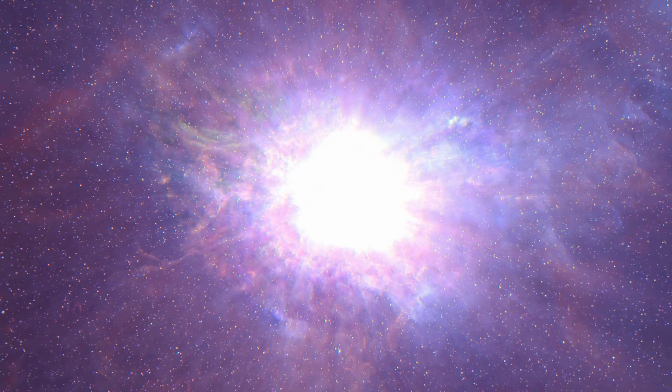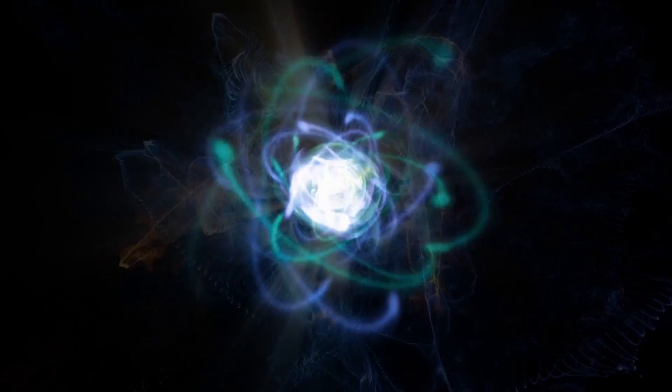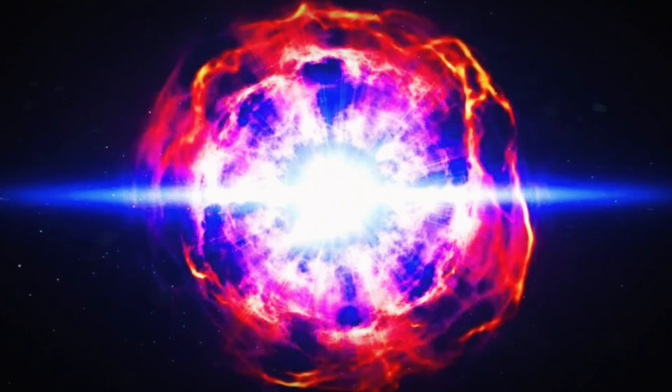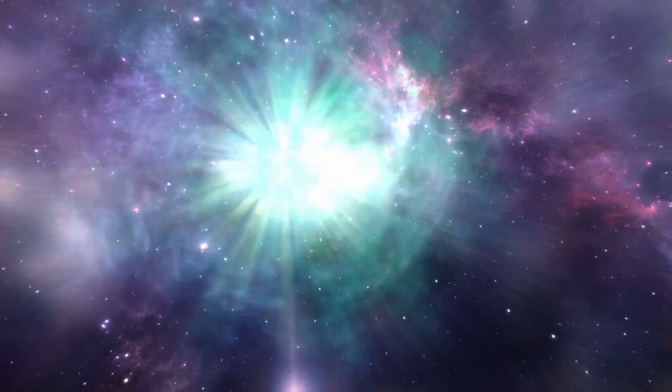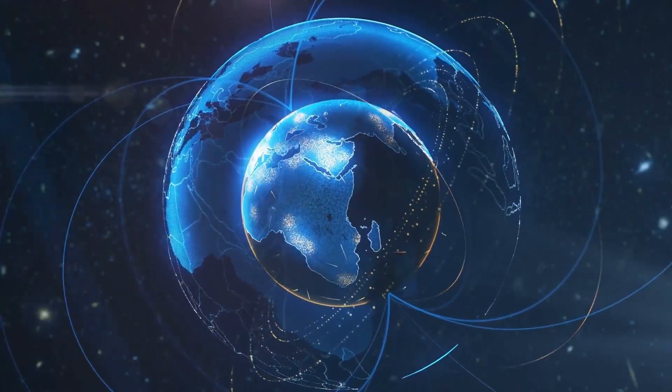Much of the supernova's energy is expended in the form of gamma radiation. For most supernovae, the gamma ray bursts have lost so much energy by the time they reach Earth that they don't pose any danger.